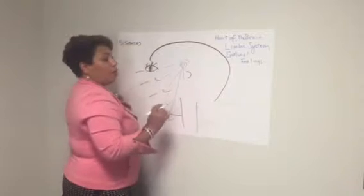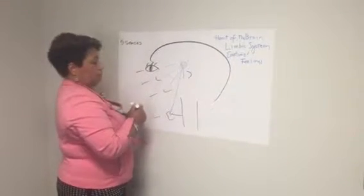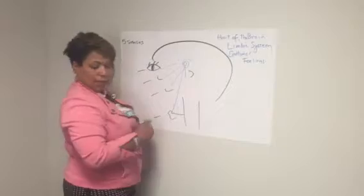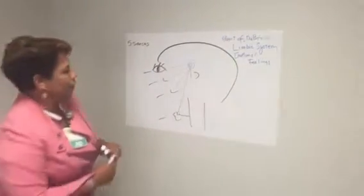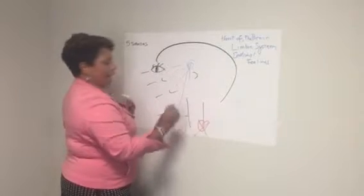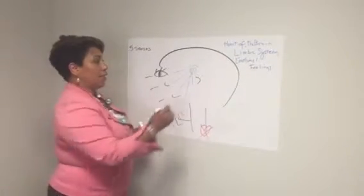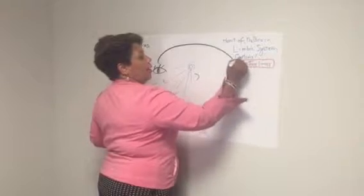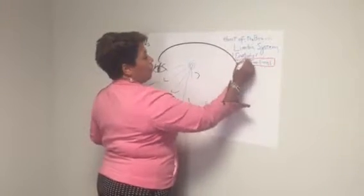It is our fight or flight. It's a very primitive part of the brain. Sometimes people think our feelings come from this part of the body, the heart. That is the organ that pumps blood. This is the organ that is responsible for feelings.